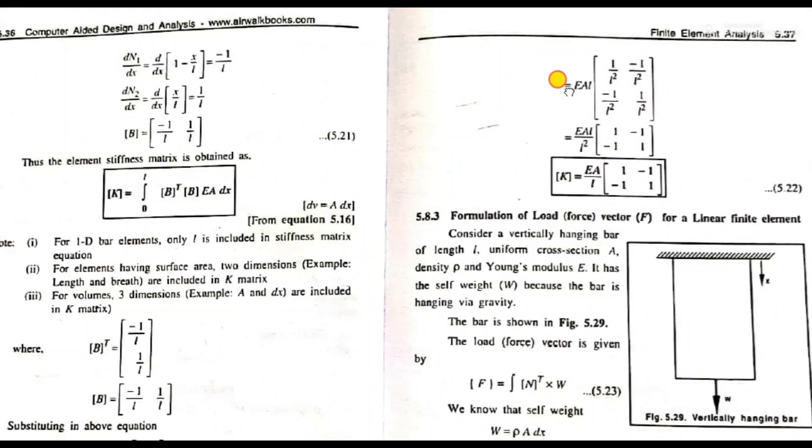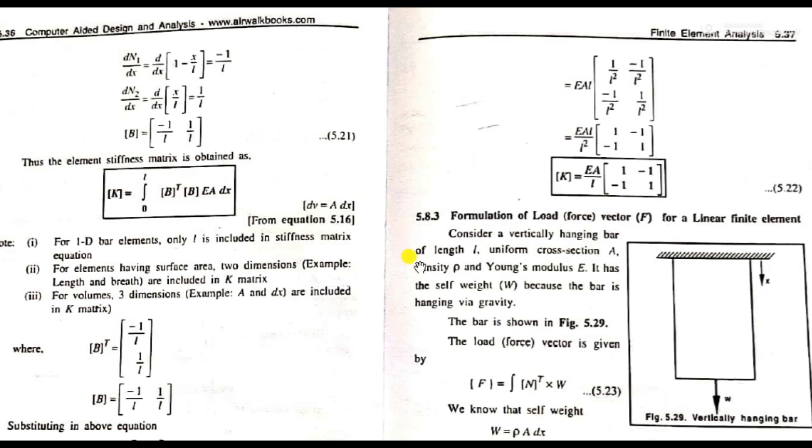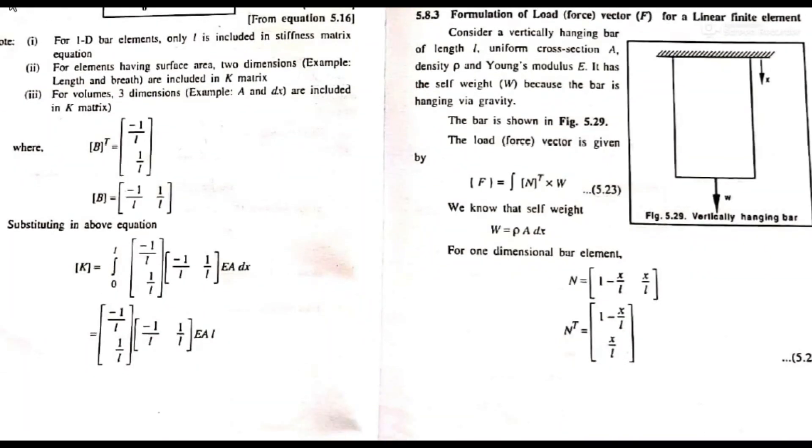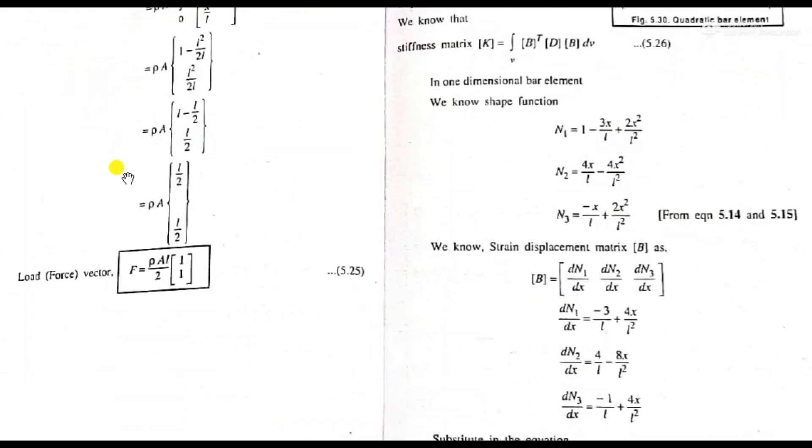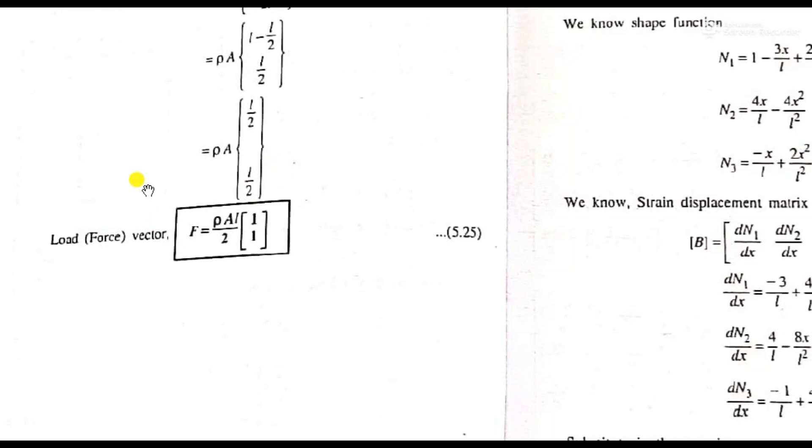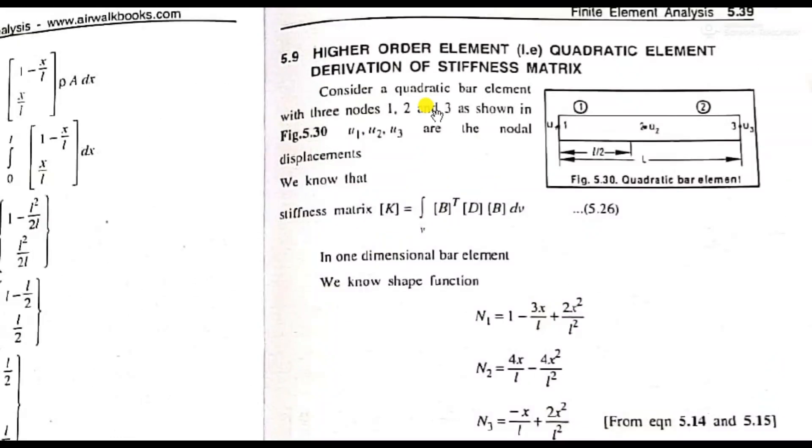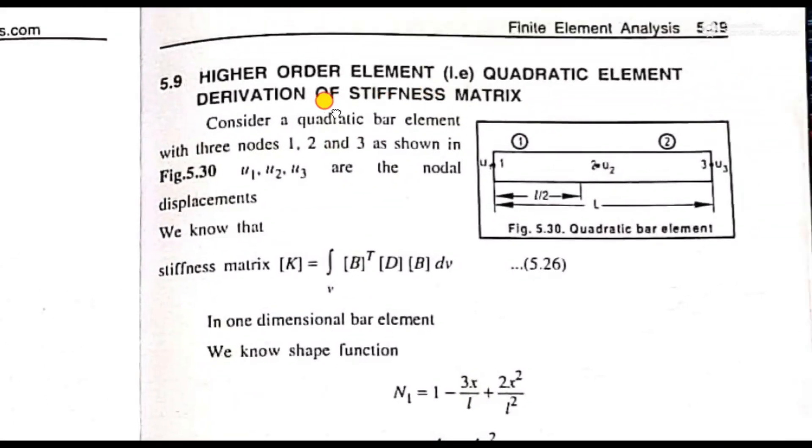Now, to explain the formulation on page 5.37, we have seen the load vector formula. F is equal to rho A L divided by 2 into matrix [1 1]. We have seen this in the previous class.